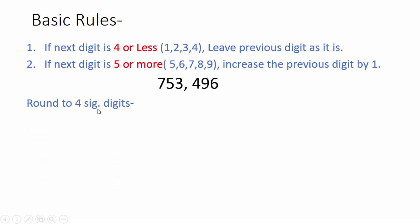Let's take an example. We are going to round this number up to four significant digits. First, check all the digits — here all are significant, so one, two, three, four. We have to round up to here. Our next digit is nine, which is more than five, so we have to increase the previous digit by one. That means this four becomes five, and the rest of the digits — seven, five, three — remain as they are.